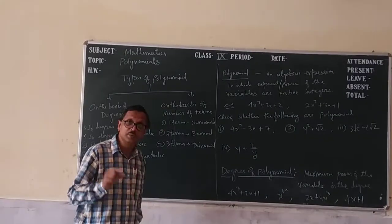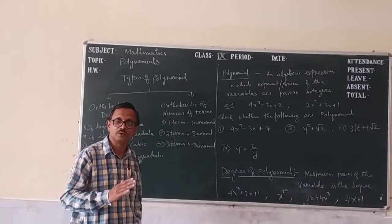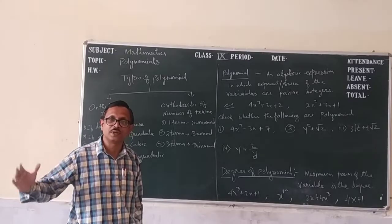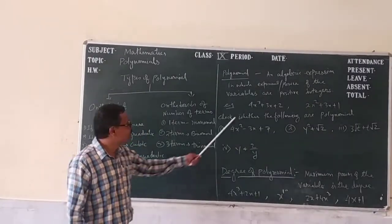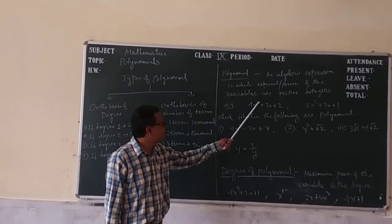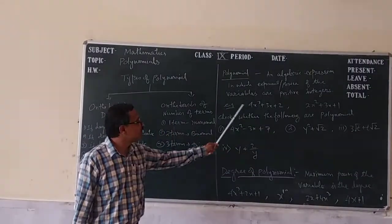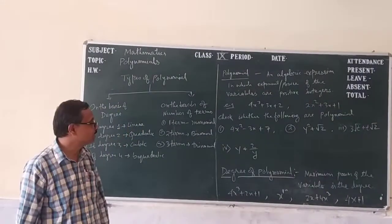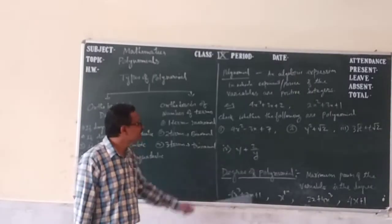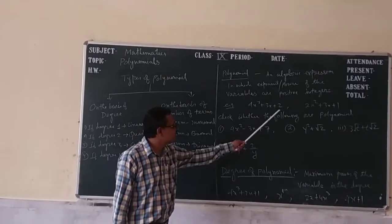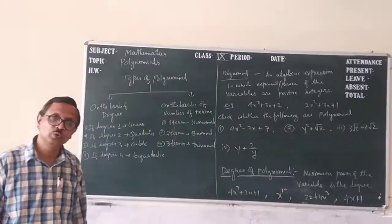These are positive integers. Positive integer means positive terms: 1, 2, 3, 4, 5, 6, 7, 8 — in such a way. So if the power of the variable is a positive integer, then this algebraic expression is known as a polynomial. Here two examples are given: 4x cube plus 3x plus 2, and 4x square plus 3x plus 1. These are examples of polynomials.